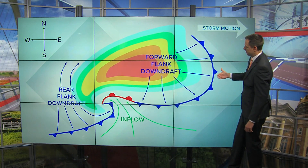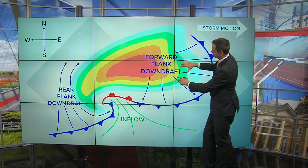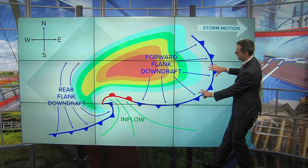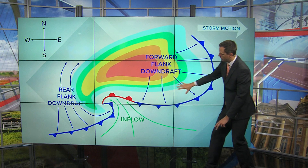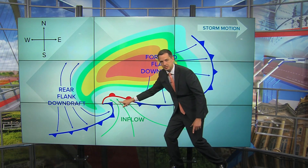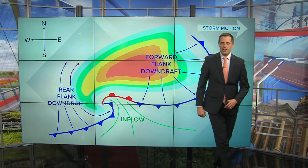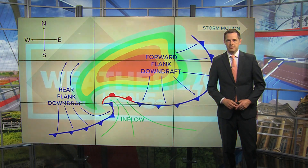Meanwhile, on the front side of the system, you have the forward flank downdraft, which pushes cool air ahead of the heavy rainfall. That dry air wrapping around the mesocyclone creates the area of rotation — usually, the tornado will be located right around there. You have cool air inflow feeding into the mesocyclone, and dry, cool air on the backside of the system as well.